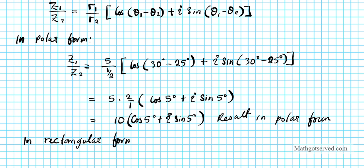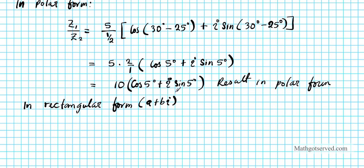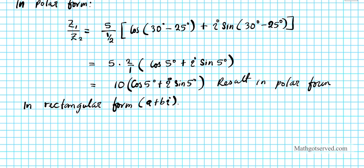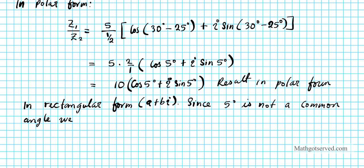Your rectangular form is your a plus bi form. The first question we ask ourselves is: is 5 degrees a common angle? We know that it's not — the smallest common angle is 30 degrees. So since 5 degrees is not a common angle, we will have an approximate result.